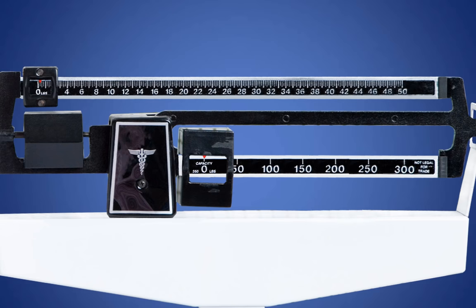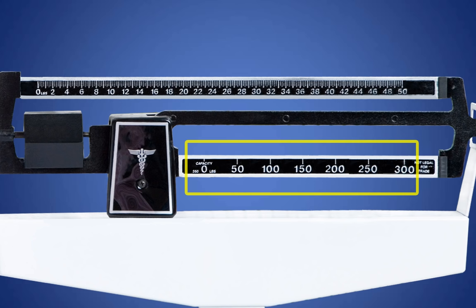Now that you have a general concept of how the scale works, we will now focus on interpreting the calibration markings on the upper and lower poise bars of the balance beam. The lower bar markings increase in increments of 50 pounds. You have 0, 50, 100, and so on.